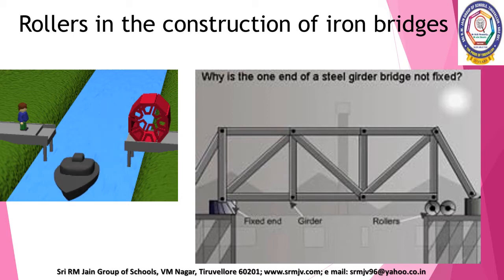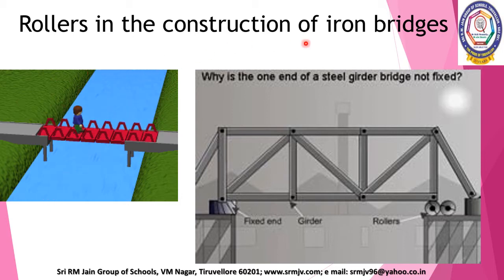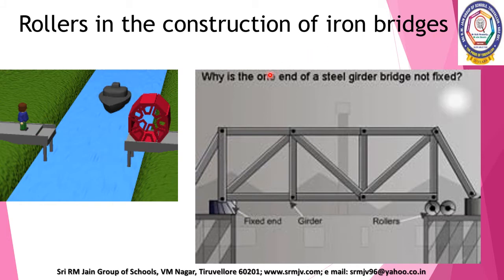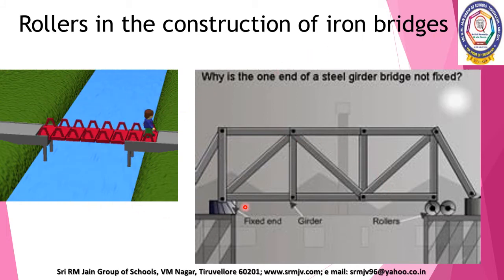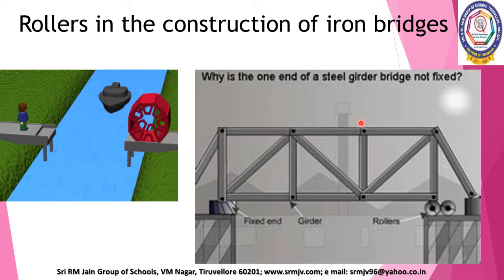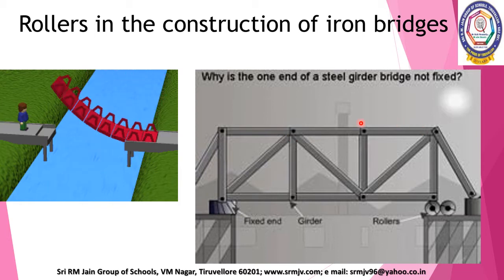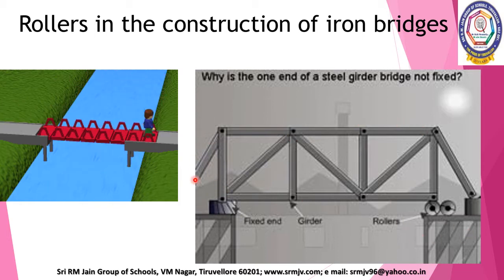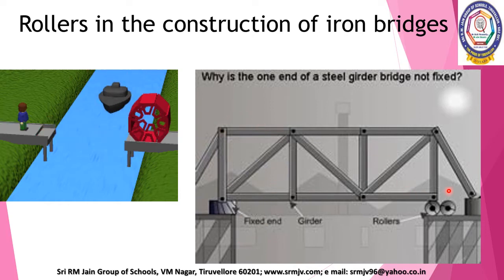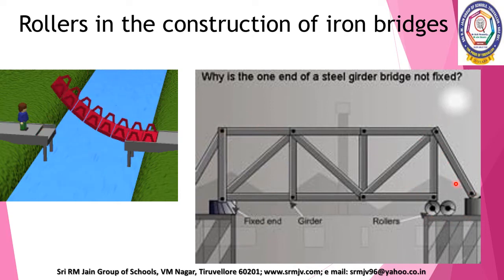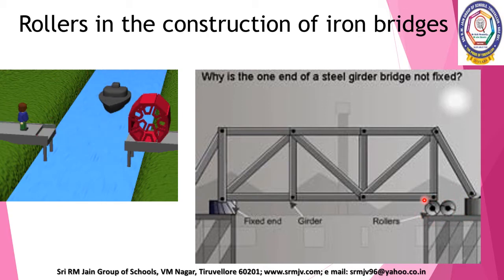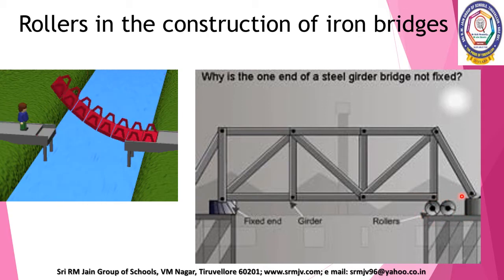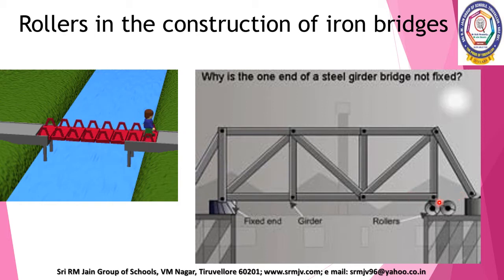Next: rollers in the construction of iron bridges. In summers, the concrete bridges tend to expand, which may cause the bridge to bend. To solve this problem, one end of the bridge is fixed, while on the other end some space is left in which rollers are placed. This allows the bridge to expand in summers, thus preventing damage to the bridge.